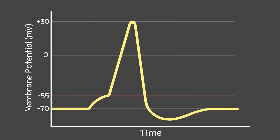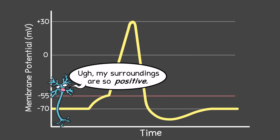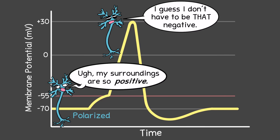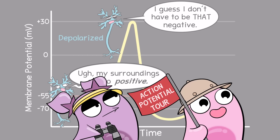We have a graph here with membrane potential on the y-axis and time on the x-axis, showing roughly how the membrane potential changes during an action potential. At the beginning, the cell is polarized because the inside is negatively charged compared to its surroundings. Then on this graph, you can see the cell will become depolarized — but how does that happen and what does it mean? Let's walk through an action potential using this graph.